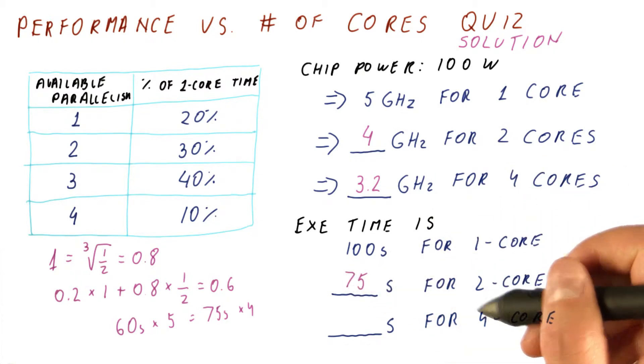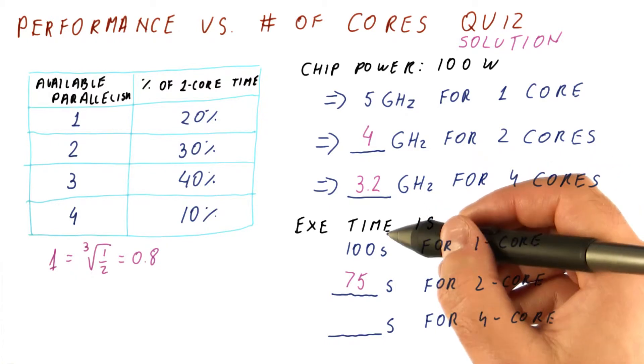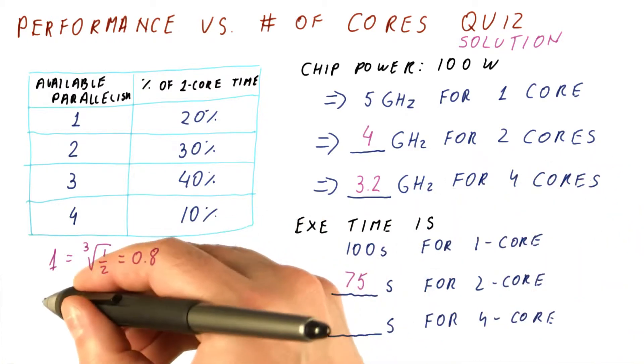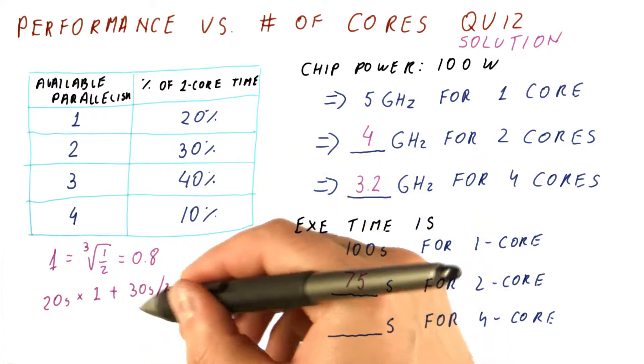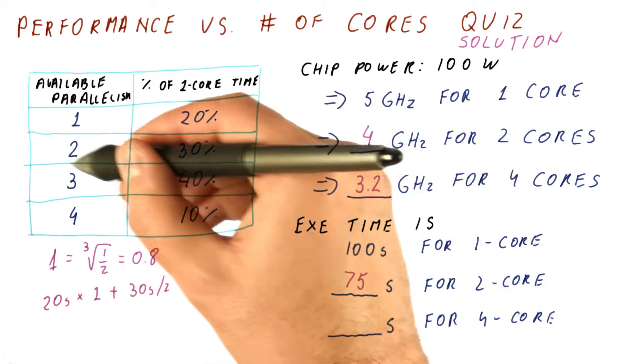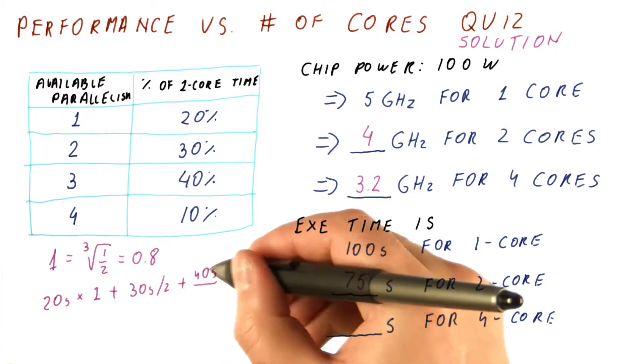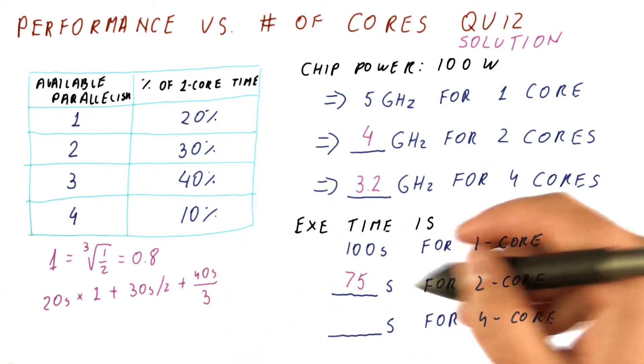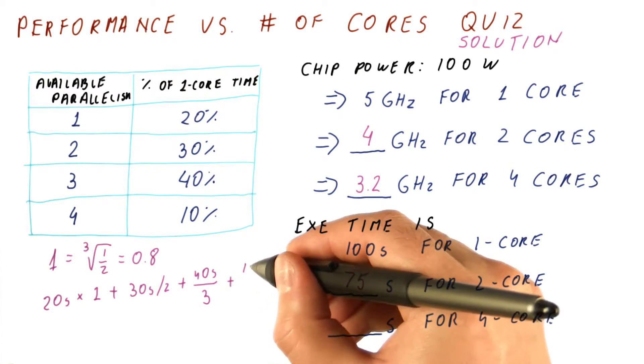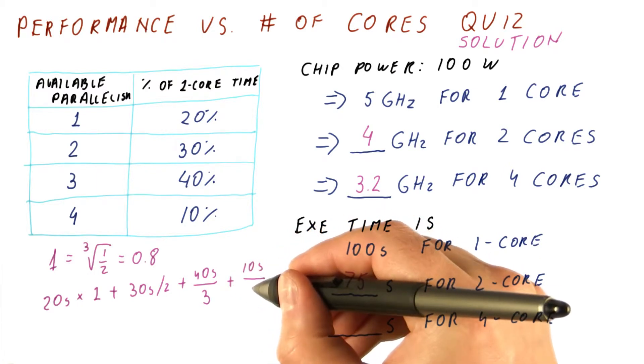And then for a 4 core execution, we get that out of the 100 seconds, for 20 seconds we can't improve by running on more cores. For 30 seconds we get a speedup of 2 because we can use 2 cores. For 40 seconds the speedup is 3 because we can use 3 of the 4 cores. And finally, for 10 seconds we get a speedup of 4.